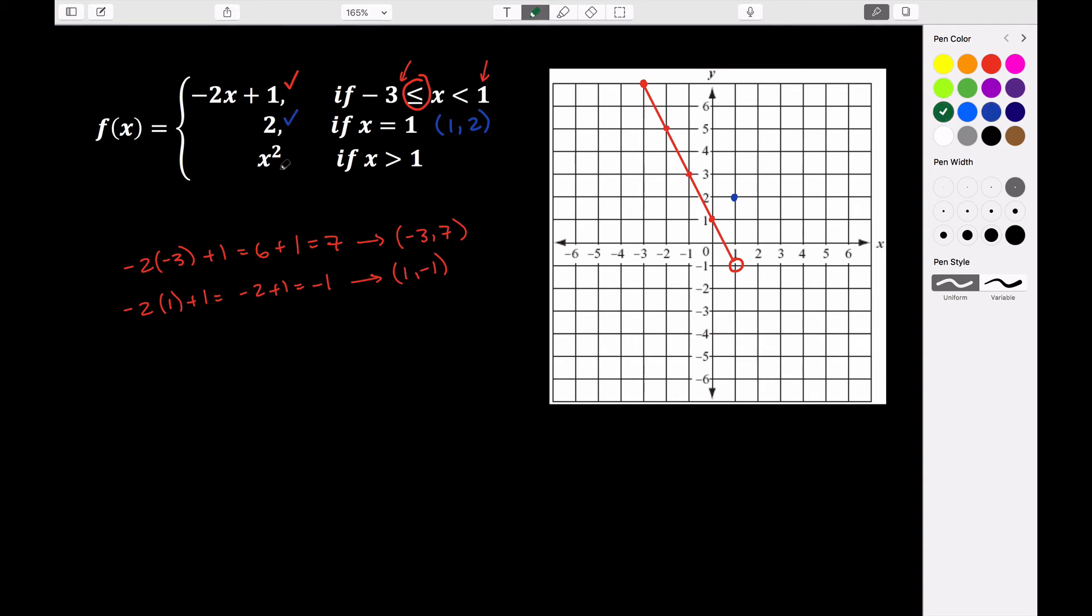And then the last one is this quadratic function, and that happens for all values of x greater than one. So at one it's not going to be included, but we still want to look at one so that we know what value it would be approaching. And then for all values to the right of one on the number line, it's going to be defined by that quadratic x squared. So if I plug one into my function, one squared, that's one. Plug two into the function, two squared is four. And we can just continue this. And we would see that we get the points one, one, two, four, three, nine, et cetera.